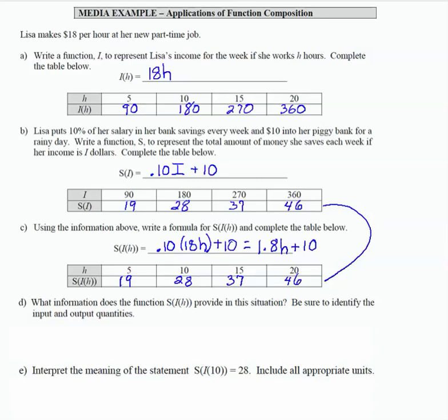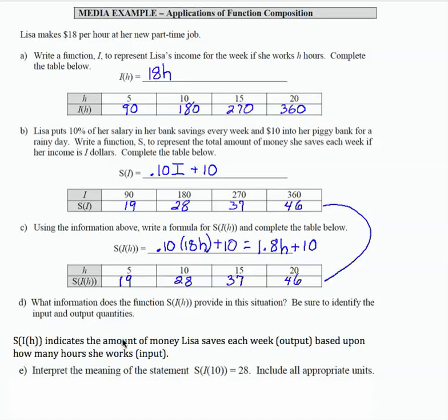So when we look at what the function represents, S of I of H indicates the amount of money Lisa saves each week, that's the output, that is the outer function, the S is her savings, based upon how many hours she works. That is the input. So it's savings as the output and hours that she works is the input.